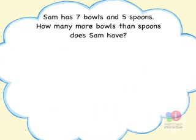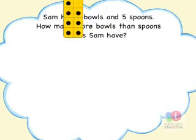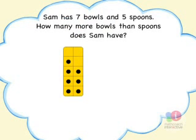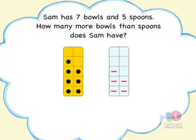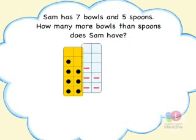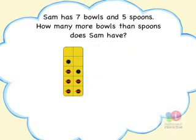Let's start by comparing one to one. Model the bowls with a dot tile, and model the spoons with a dash tile. To match one spoon to each bowl, slide the cards one on top of the other. Now children can match one to one and see which bowls have no spoon.